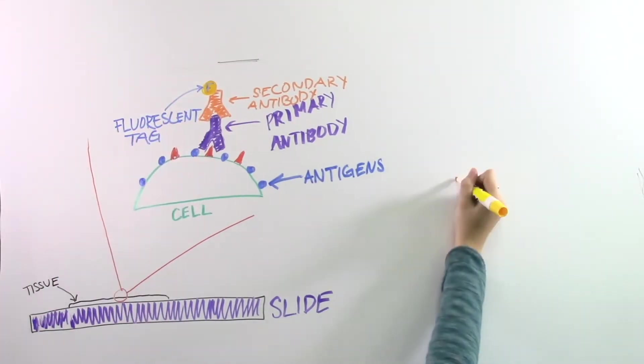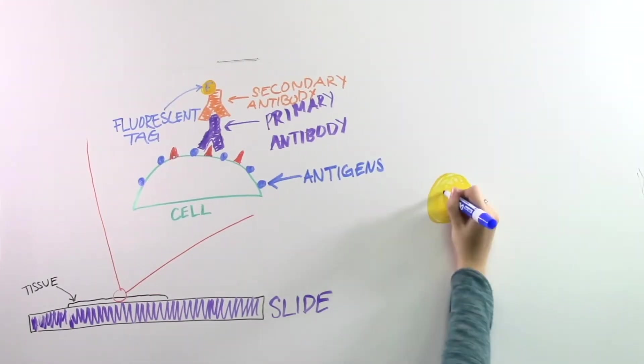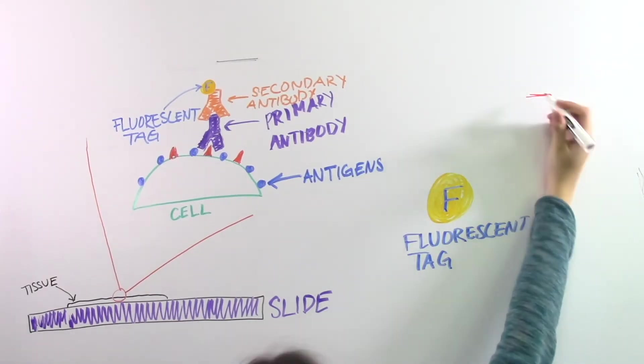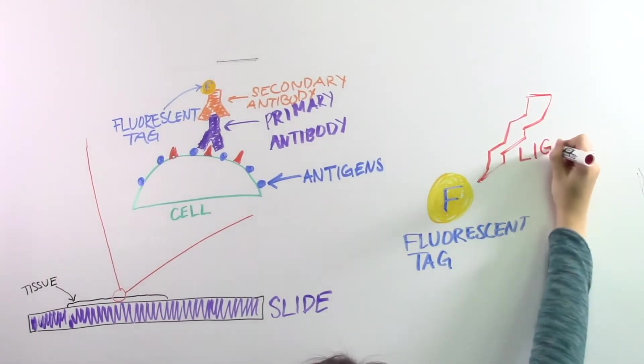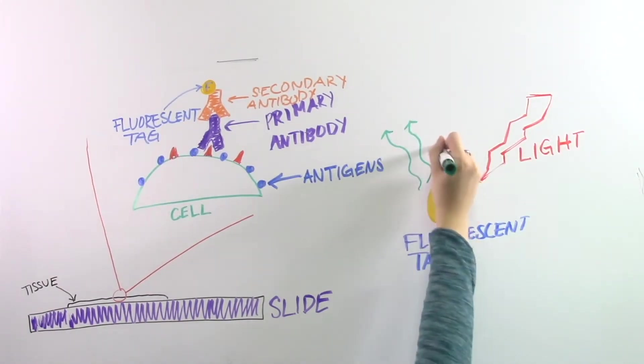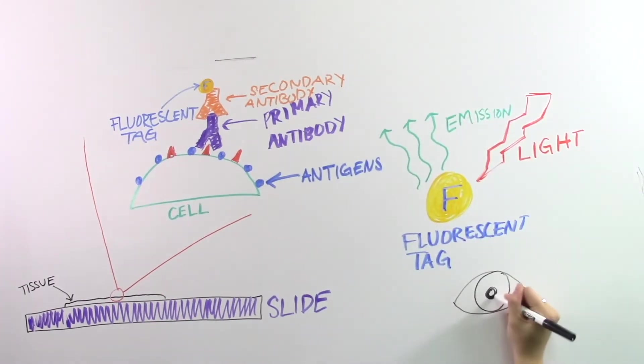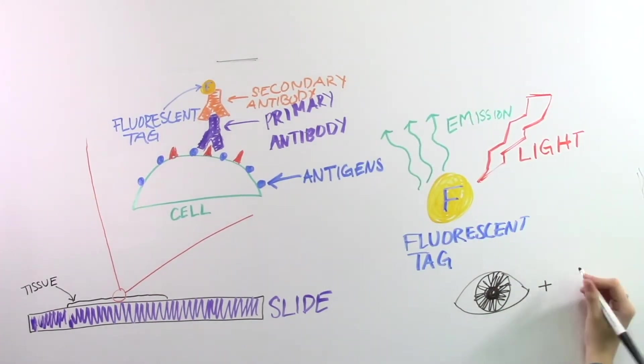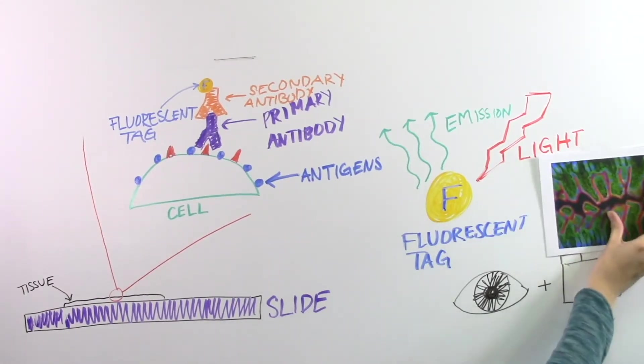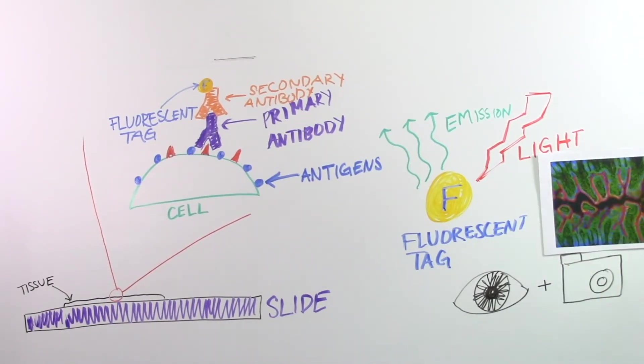The secondary antibodies are typically bound to a fluorescent tag. This fluorescent tag is made of a molecule called a fluorophore. The specimen is illuminated with a light of a specific wavelength, or wavelengths, which is absorbed by the fluorophores causing them to emit light of longer wavelengths. Scientists can then visualize the light being emitted by the fluorophores and can take cool, colorful photos like this.